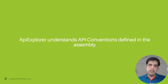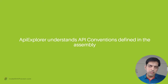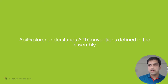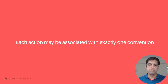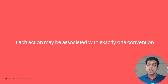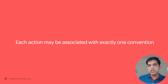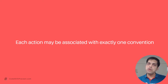The API analyzers, when looking for controllers in your assembly, also look at these conventions. If they are present, they use that information to generate the final OpenAPI documentation. One important point to remember is that each action may be associated with exactly one convention only. As we will see in forthcoming lessons, when you apply these conventions, you need to apply only one convention at a time for an action method.